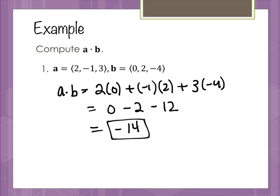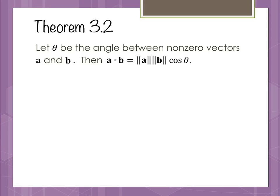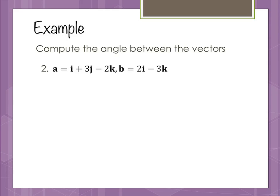We're going to also define the dot product in a way that involves magnitude. If we take an angle theta — the angle between our two vectors a and b — then the dot product a dot b is actually the magnitude of a times the magnitude of b times the cosine of theta. Using this variation of our definition, we can actually find the angle between two vectors.